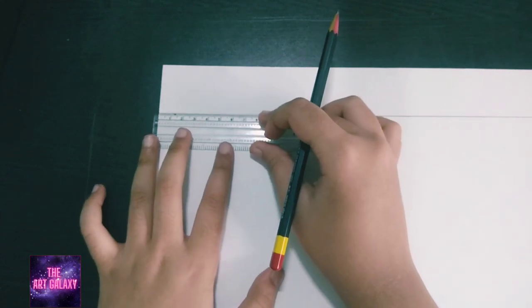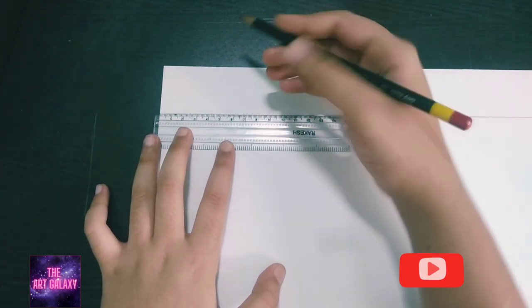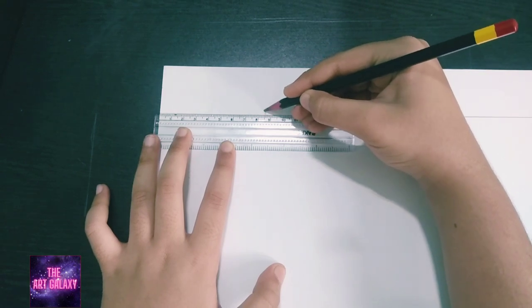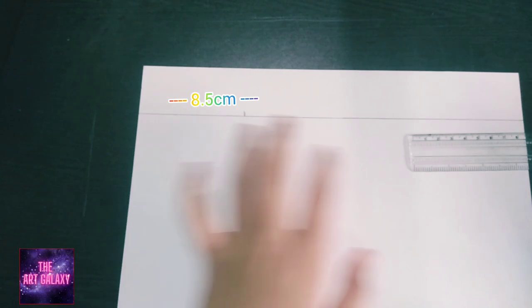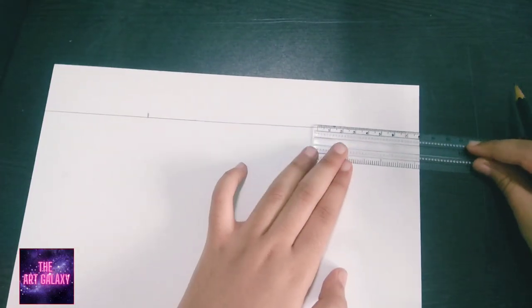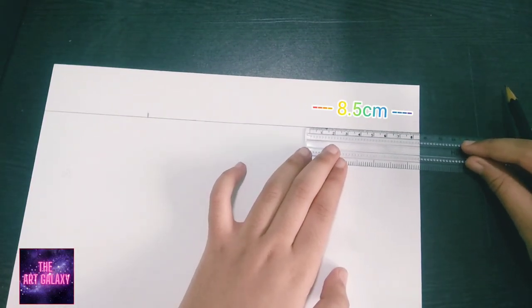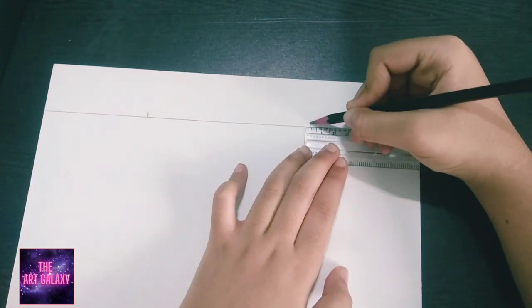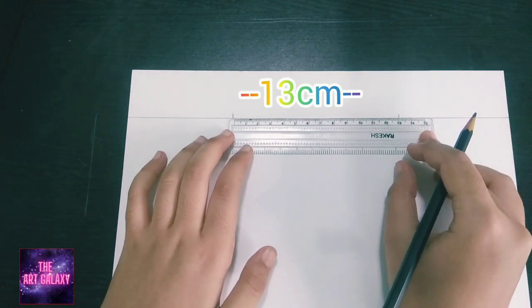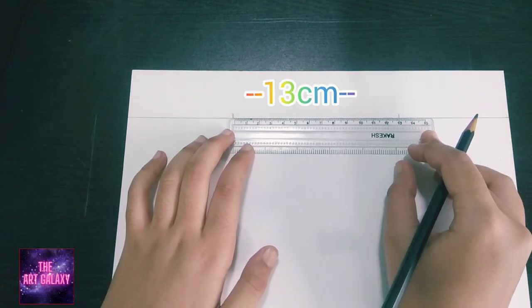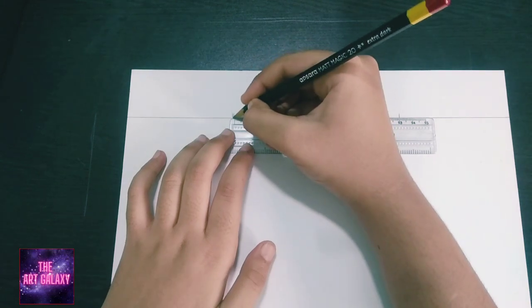Now we have to mark the distance of 8.5 centimeters from one side of the page. Repeat this for the other side of the page as well. The distance between these two marks should be 30 centimeters. Make sure your marks are quite clear.